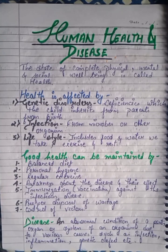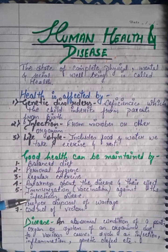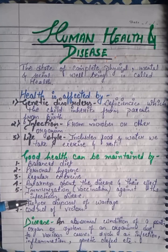Good health can be maintained through several steps. First is a balanced diet — we focus on what we eat. Second is personal hygiene. Third is regular exercise. Fourth is awareness about diseases and their effects.